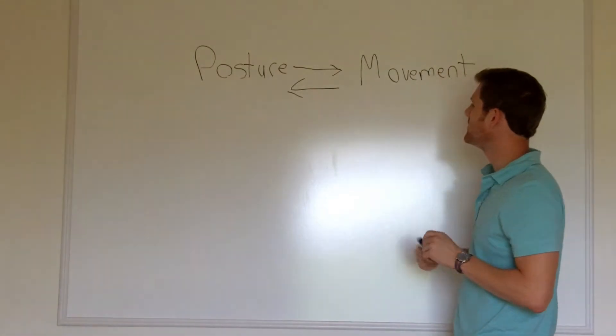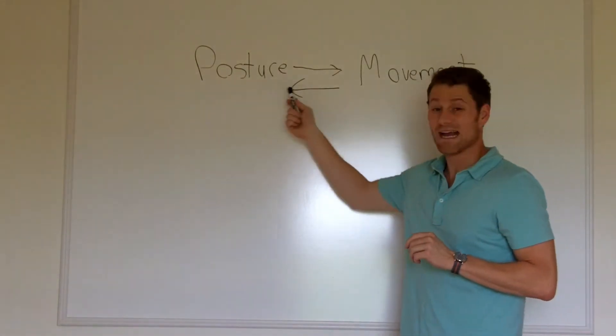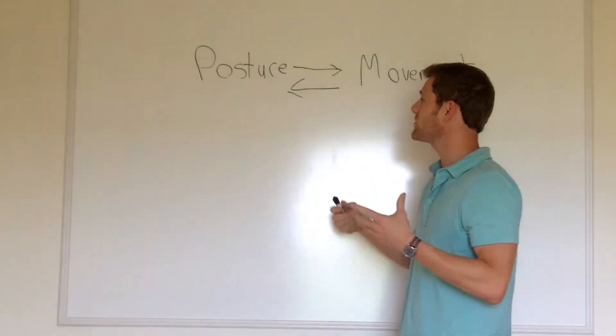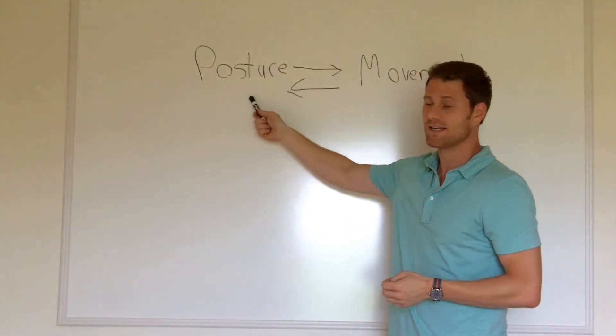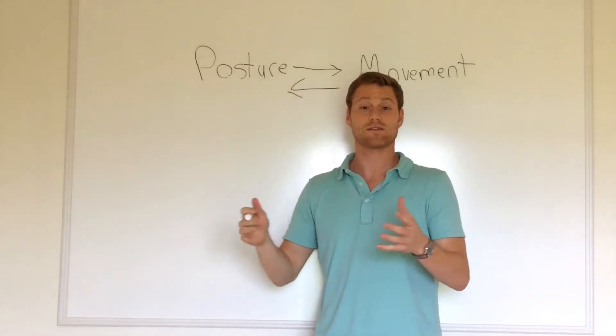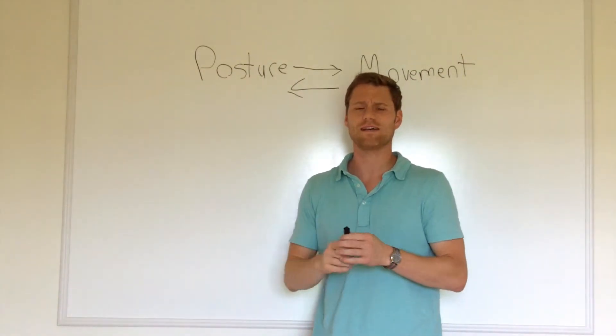And so what these two things help us do is identify problems inside your body. You identify what's going on. Posture can be a good identifier as well as movement. And you use these things to assess where you're at and where you need to go.